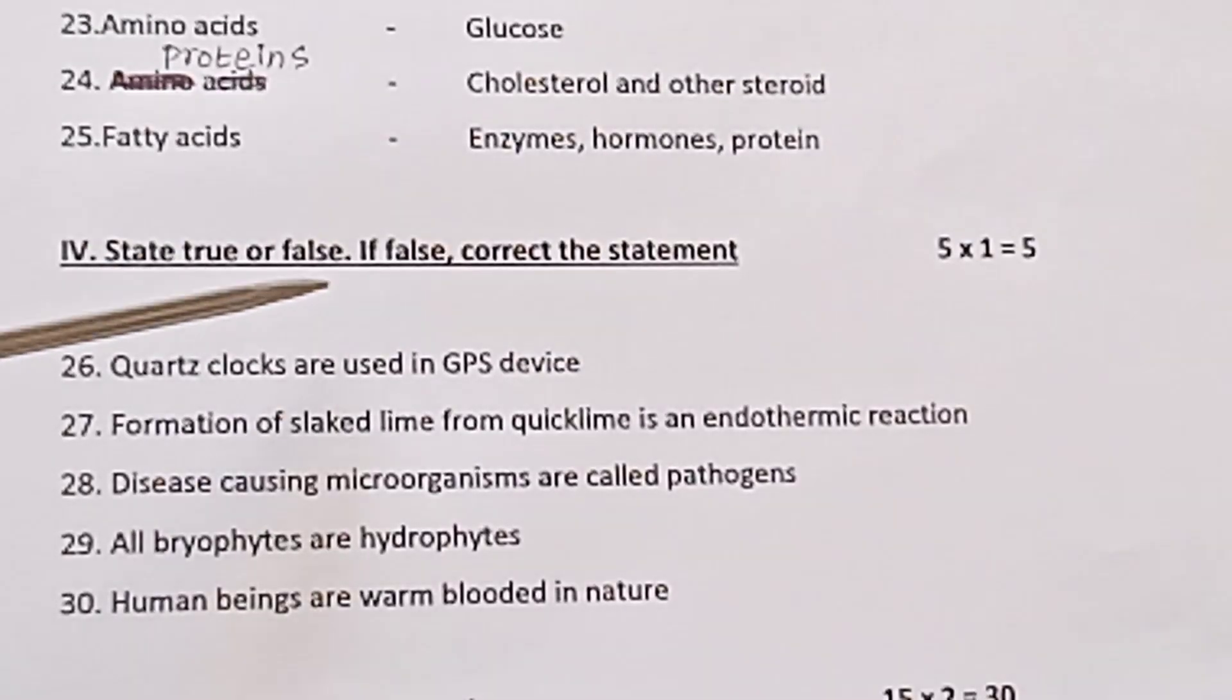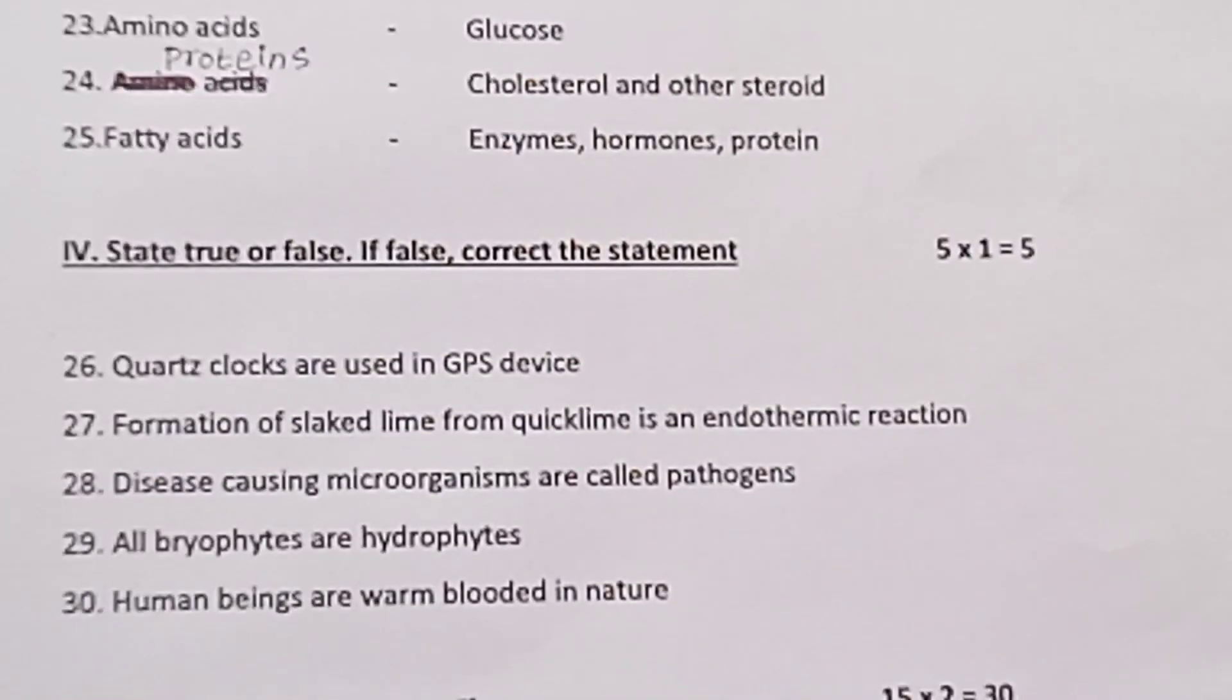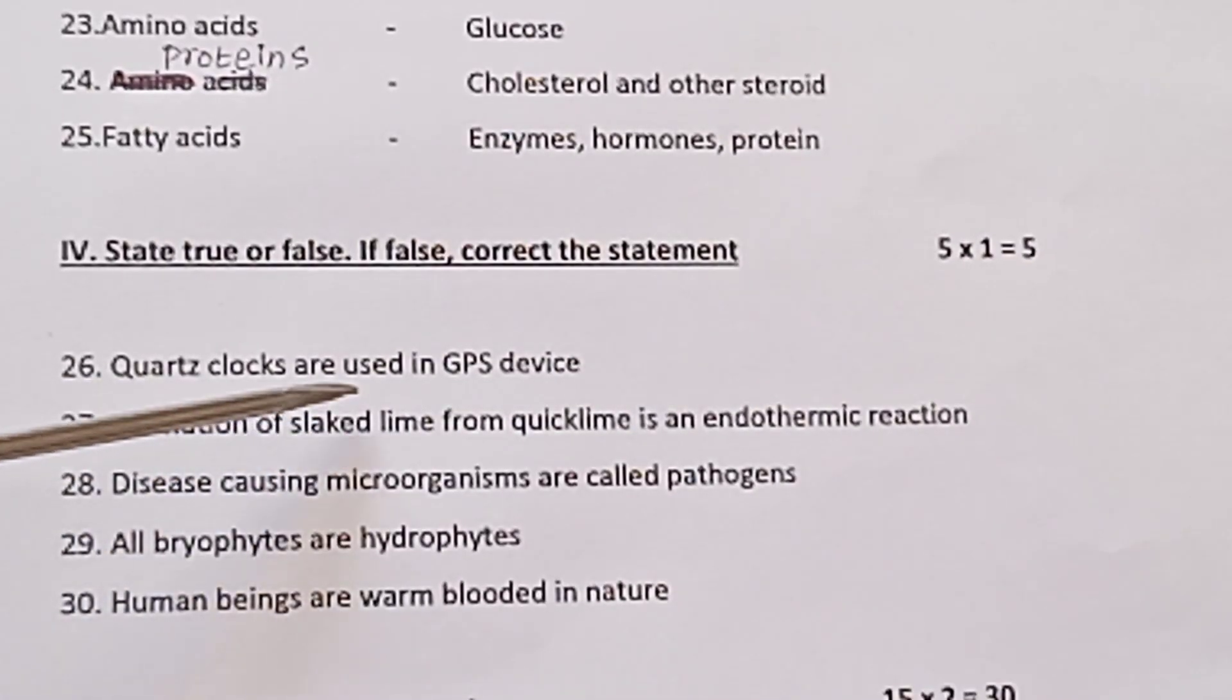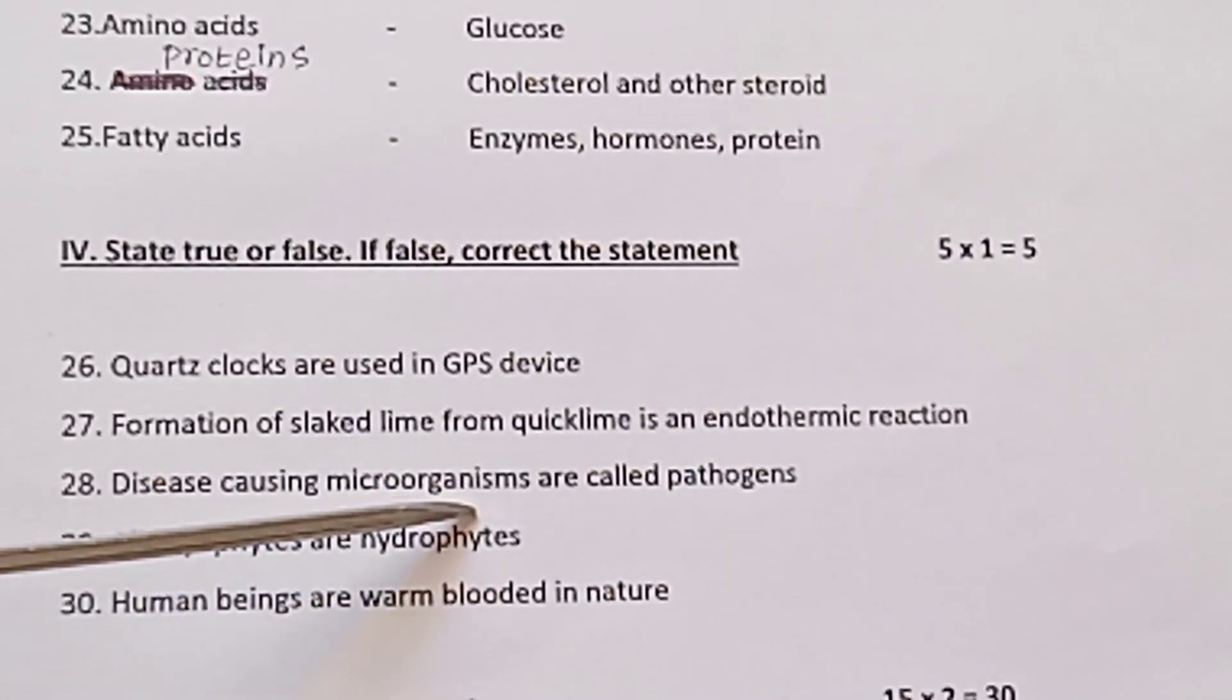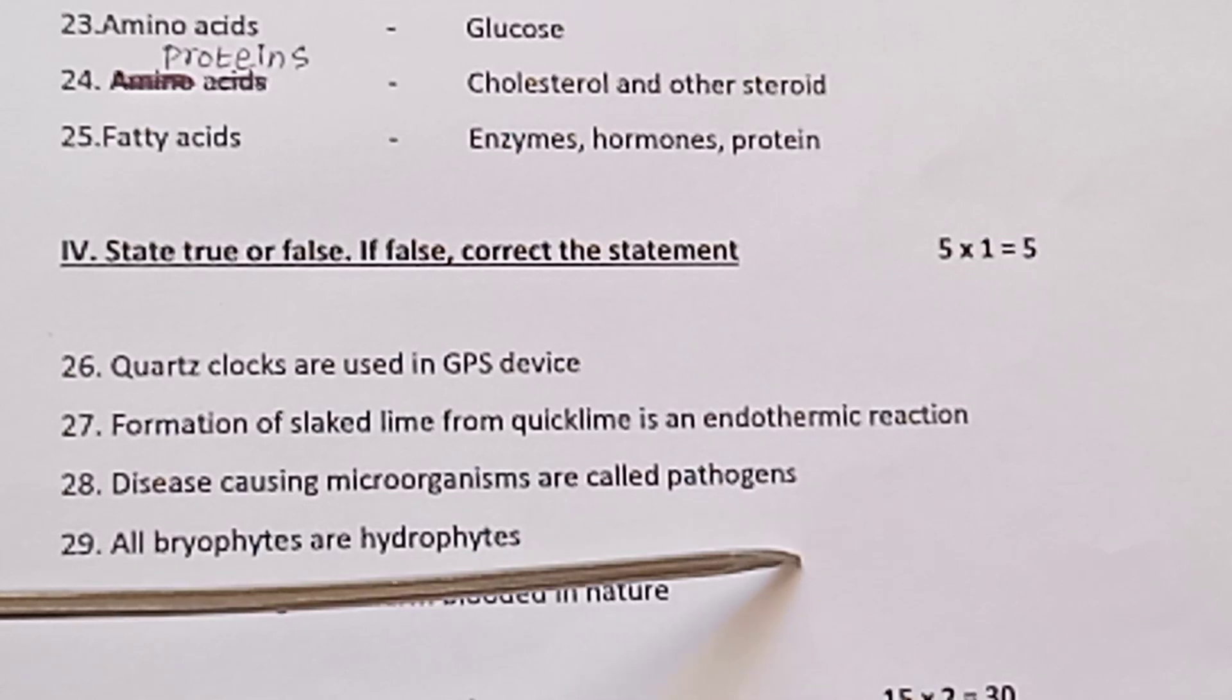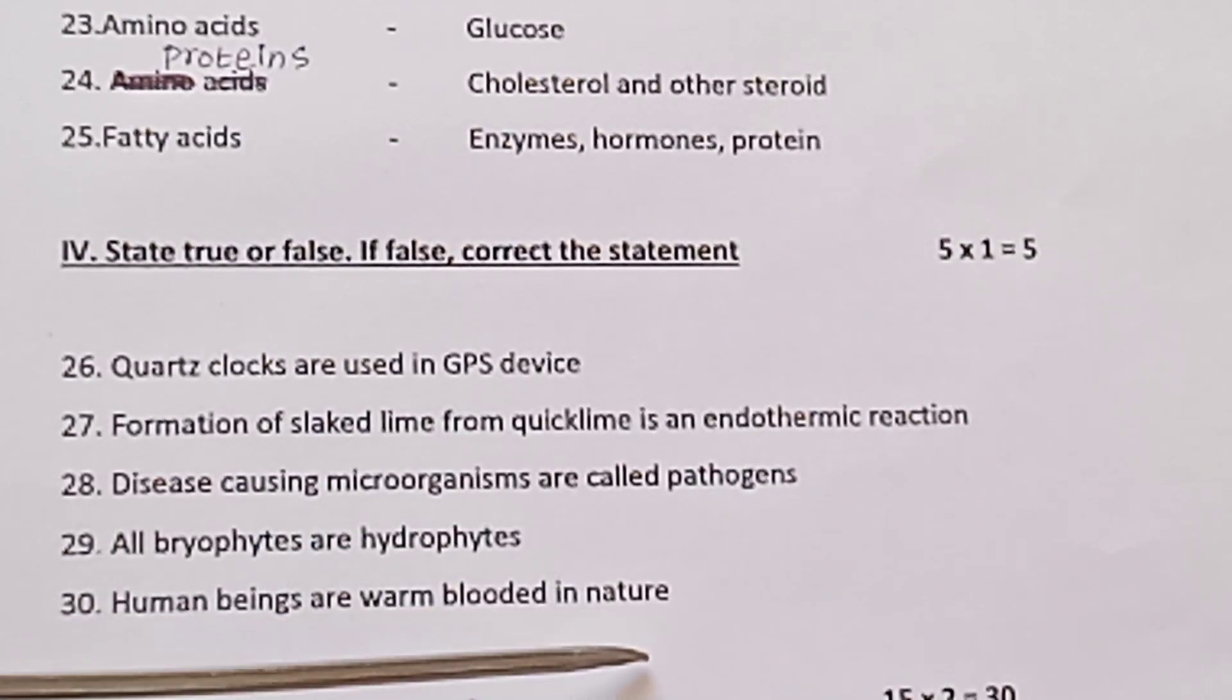Roman numeral 4, state true or false, if false correct the statement. Five into one is equal to five. 26, quartz clocks are used in GPS device. 27, formation of slaked lime from quick lime is an endothermic reaction. 28, disease causing microorganisms are called pathogens. 29, all bryophytes are hydrophytes. 30, human beings are warm blooded in nature.